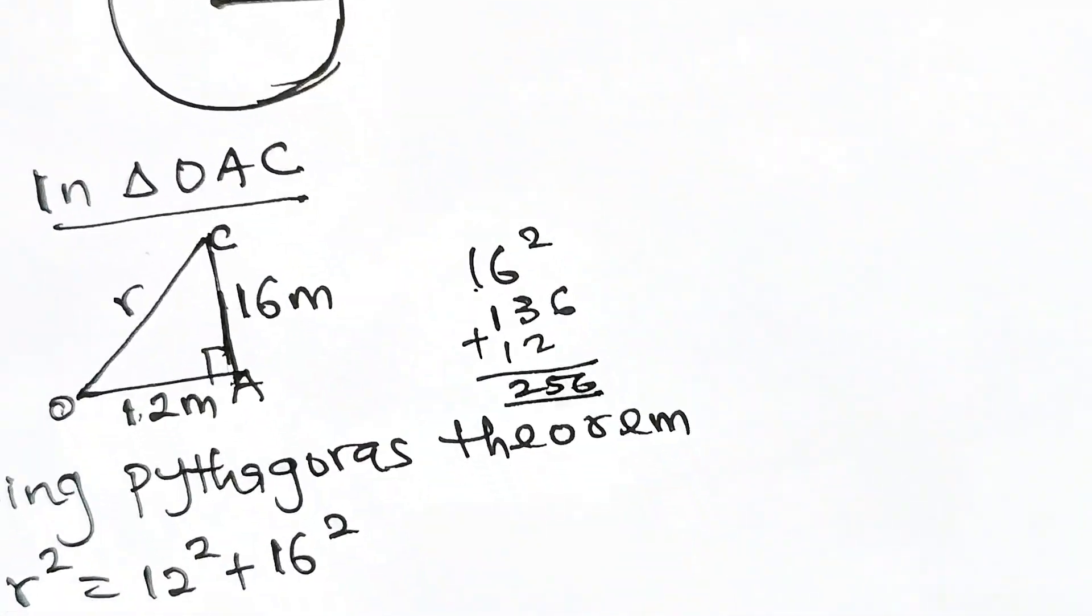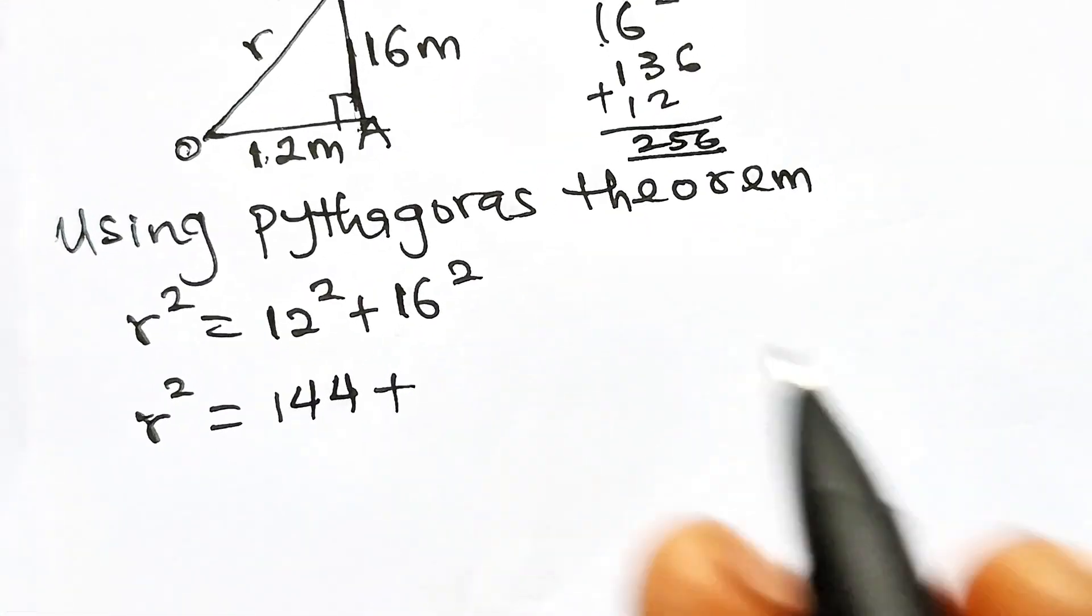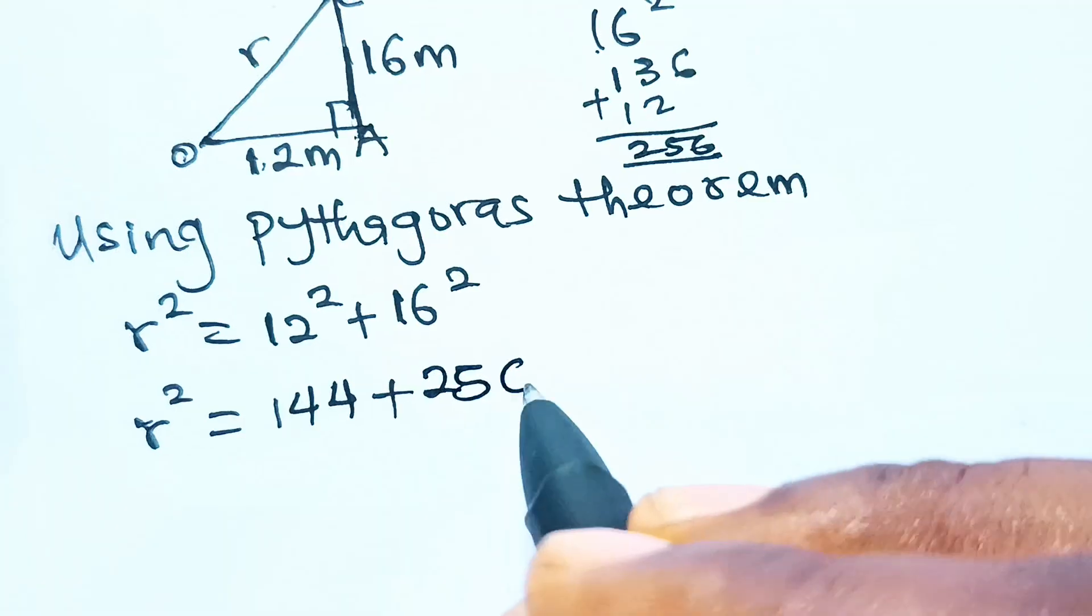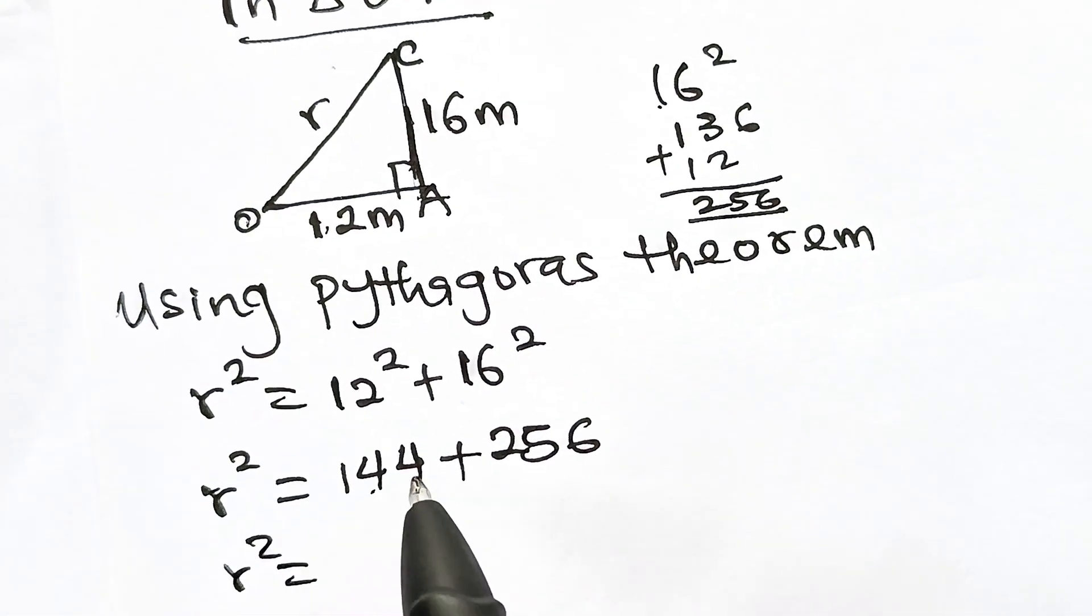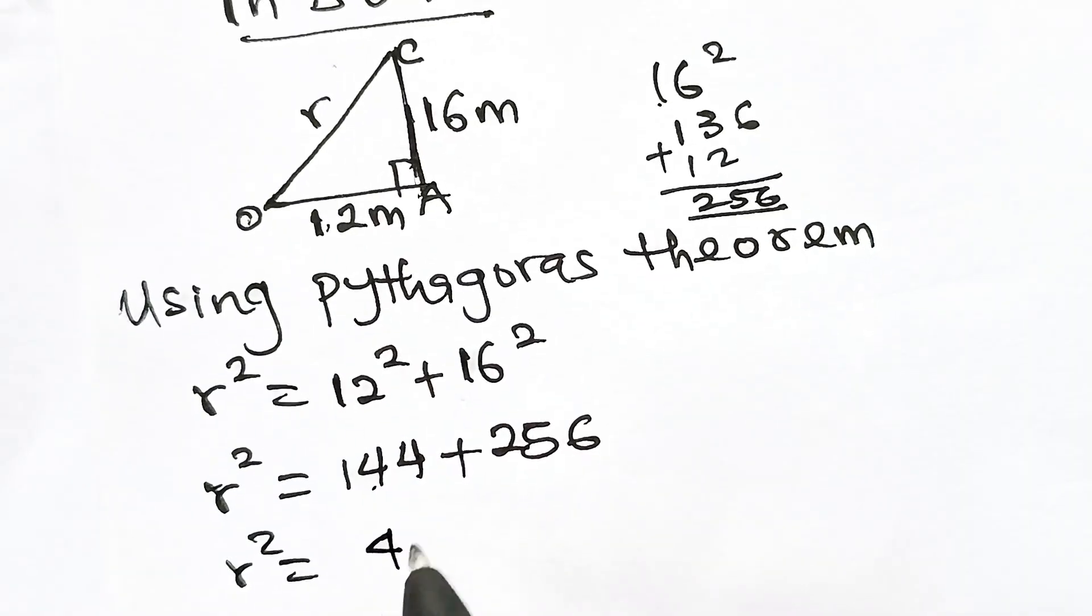So 16² is 256. Therefore, r² = 144 + 256 = 400.